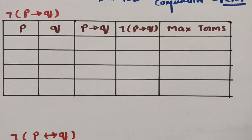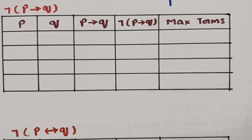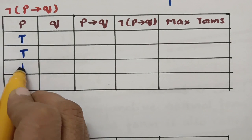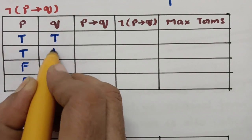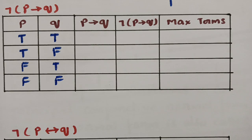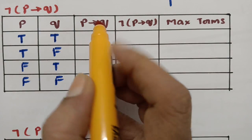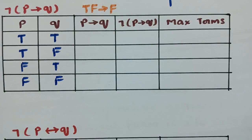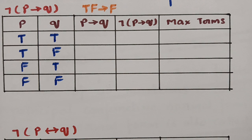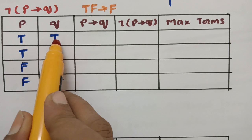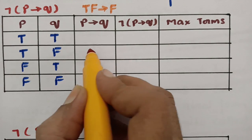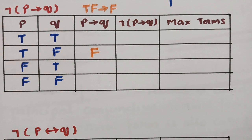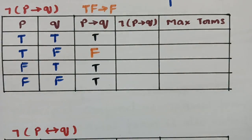The next question is ¬(P→Q). Again I take the truth table with P: T, T, F, F and Q: T, F, T, F. For implication P→Q: if the first is true and the second is false, it is immediately false. Checking: T,T → T; T,F → F; F,T → T; F,F → T. The negation ¬(P→Q) reverses these: F, T, F, F.